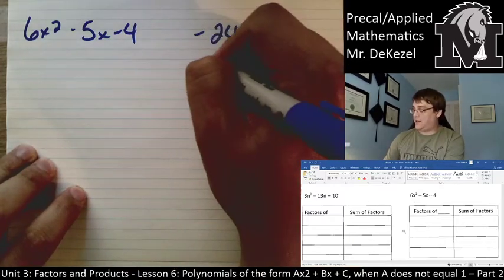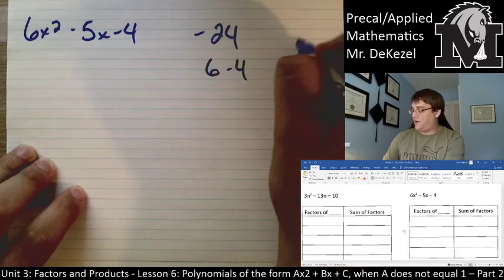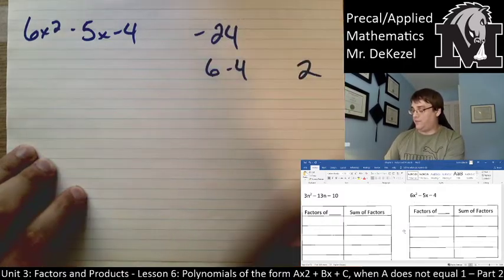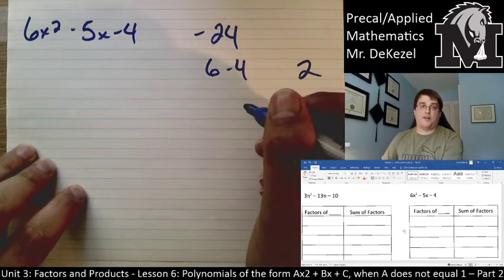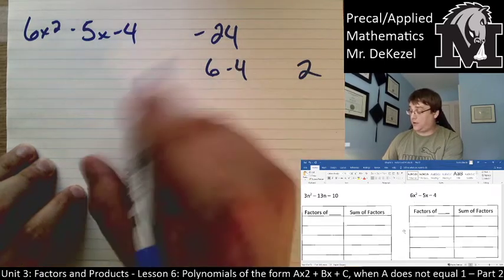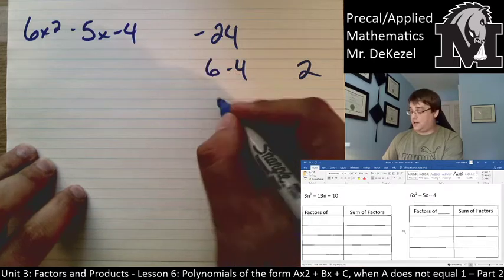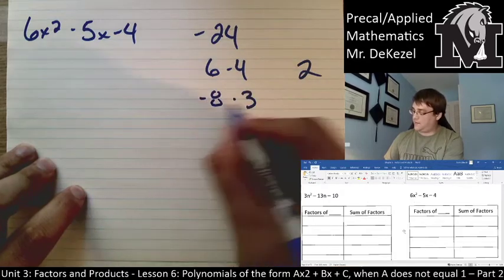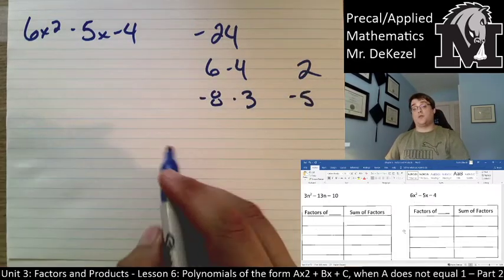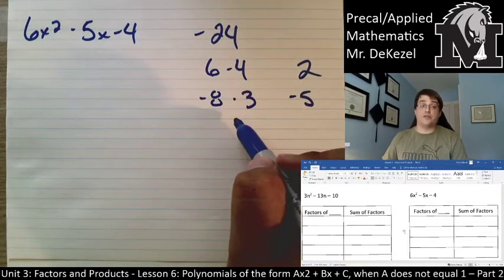If we do like 6 and minus 4, that doesn't quite work because that's 2. Let's do something that's a little bit farther apart. 8 and 3. 8 and 3 would get us to 24. We need a negative 8 and a positive 3. That would sum up to negative 5.